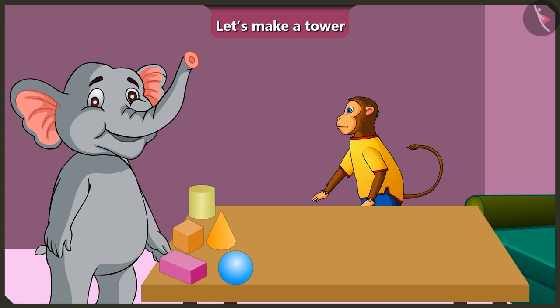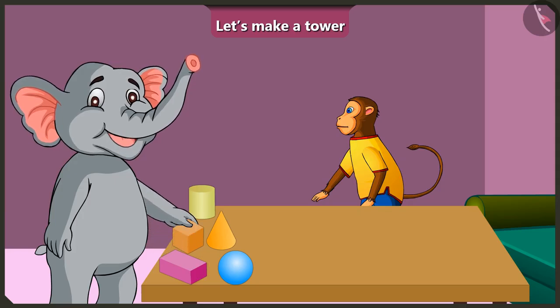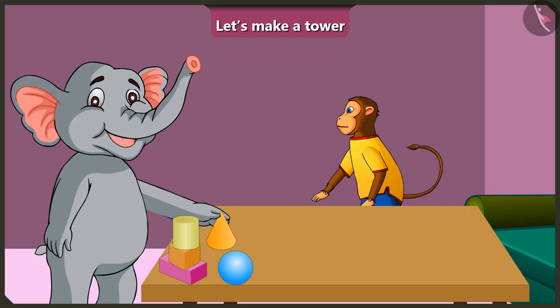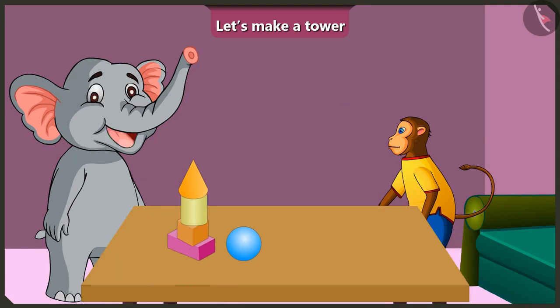Now I understood. I will make it again. This cuboid at the bottom. Above it the cube. Above it this cylinder. And above it this cone shape. See, the tower is made. Now I understood that we cannot make a tower using round objects and that cone shaped objects should only be placed on top of the tower.